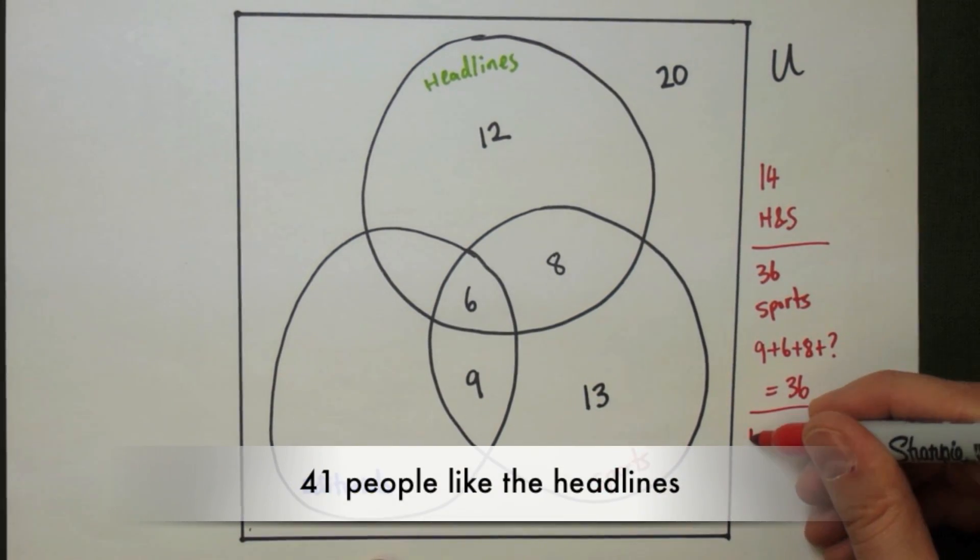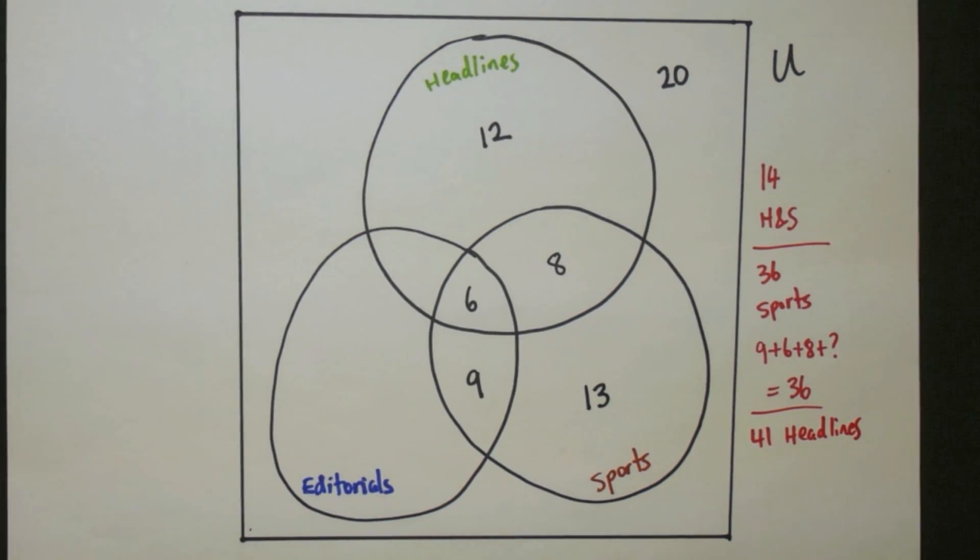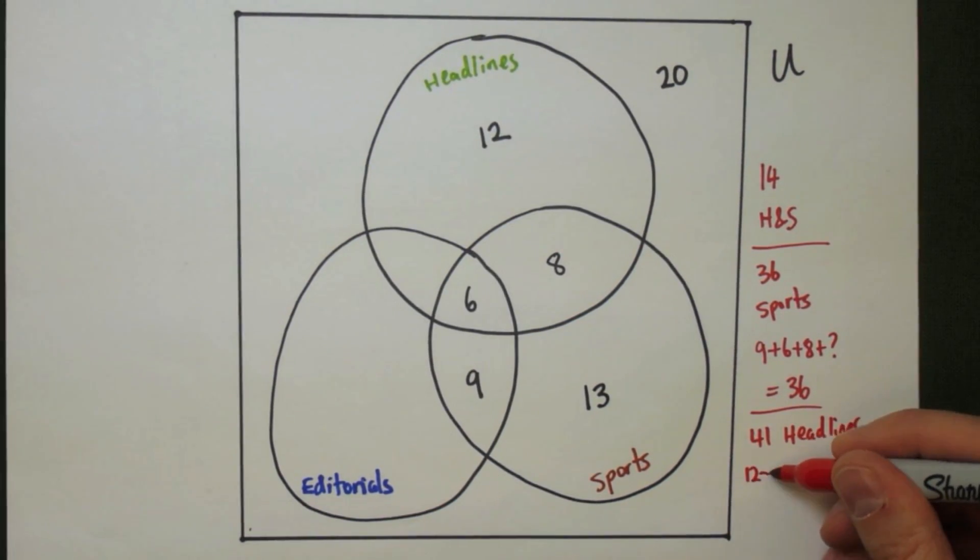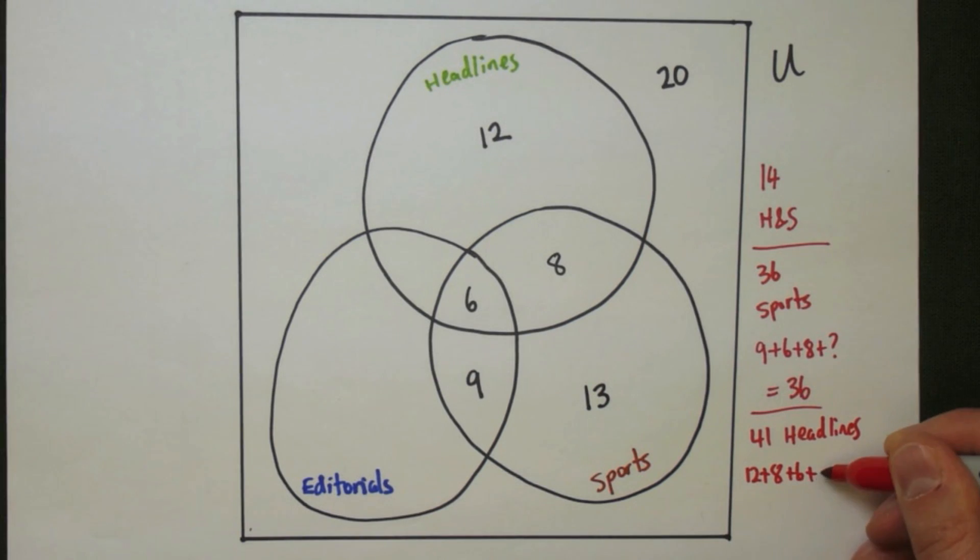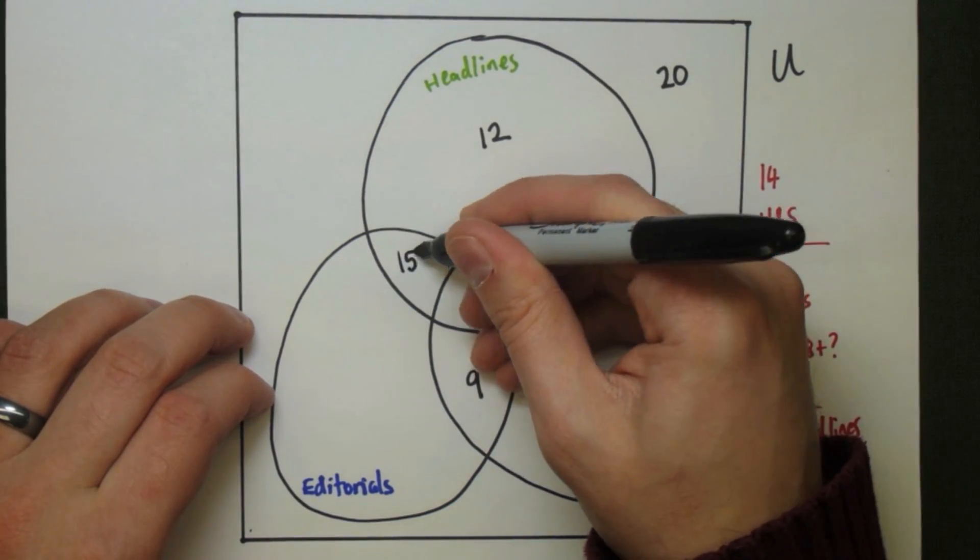41 people like the headlines. And so we have 3 of the circle filled in for the headlines already. With the 41 people total, we can fill in the fourth. 12 plus 8 plus 6 plus whatever the number that goes in the last part has to equal 41. And so we get 15 people here.